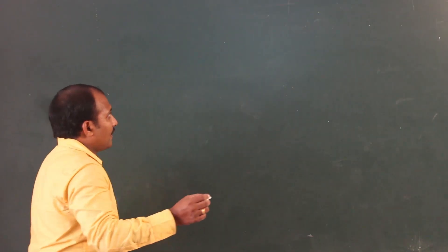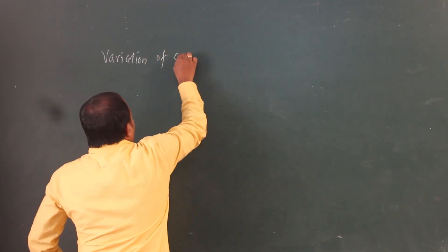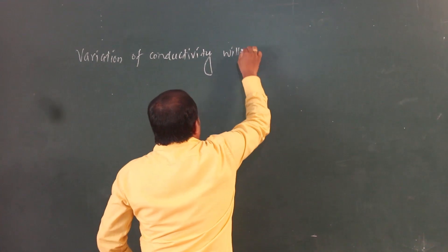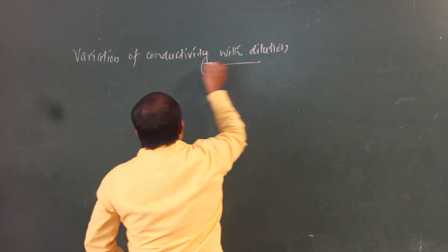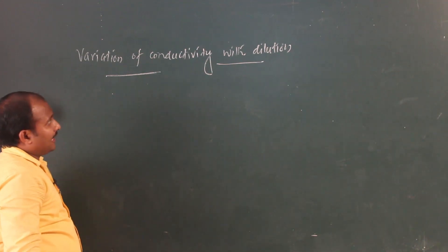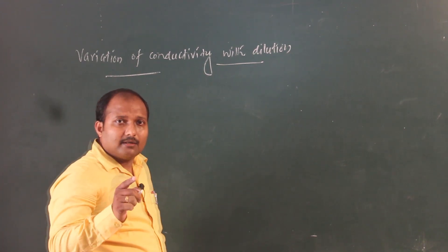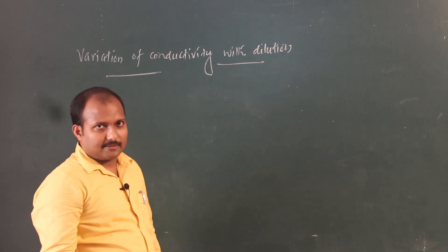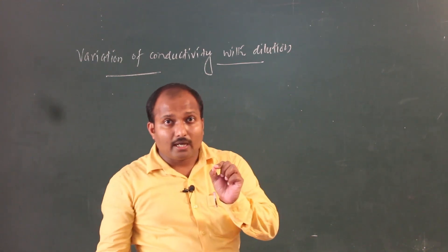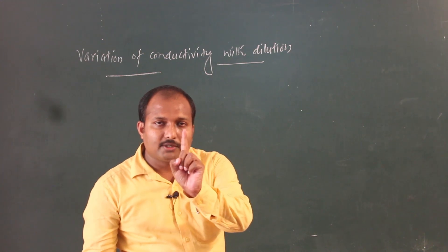Let's talk about the topic: variation of conductivity with dilution, and variation of molar conductivity with dilution. The definition of conductivity or specific conductance is the reciprocal of resistivity or specific resistance. Conductivity is also defined as the conductance of the ions present in one centimeter cube of the solution.